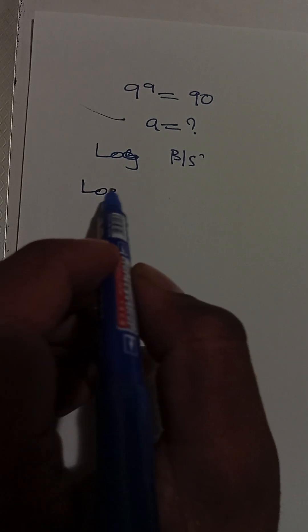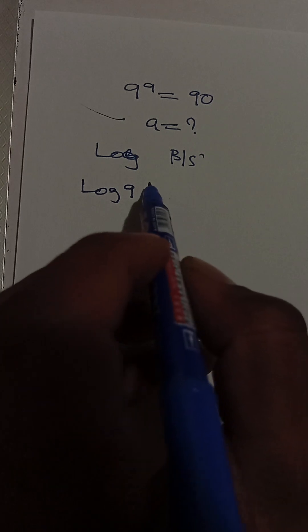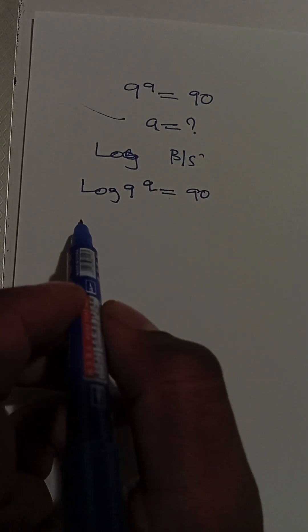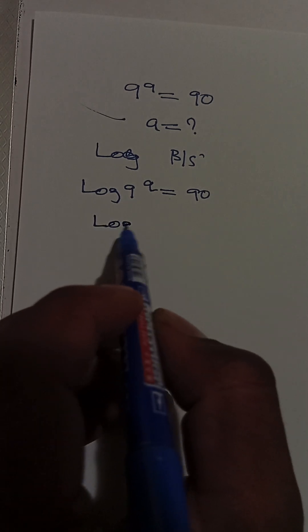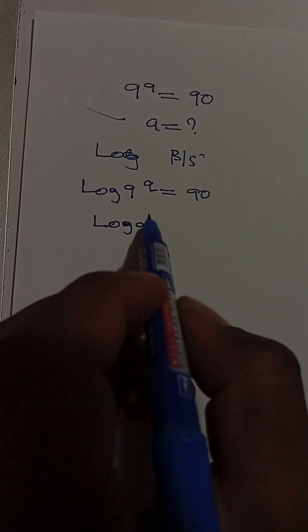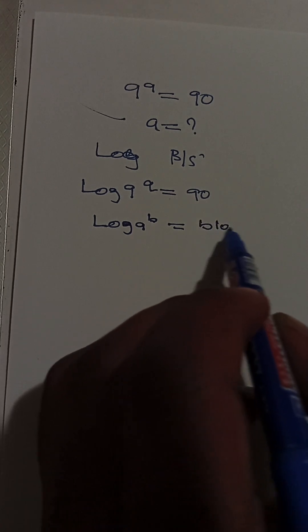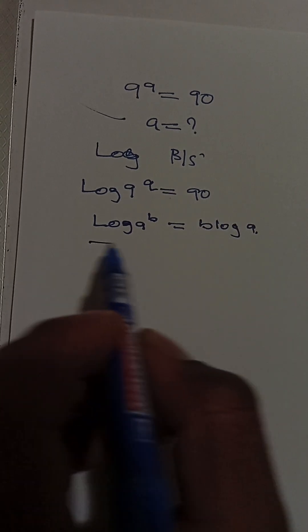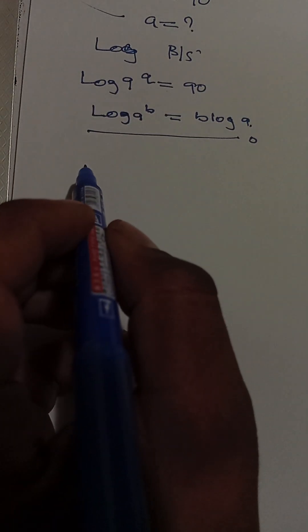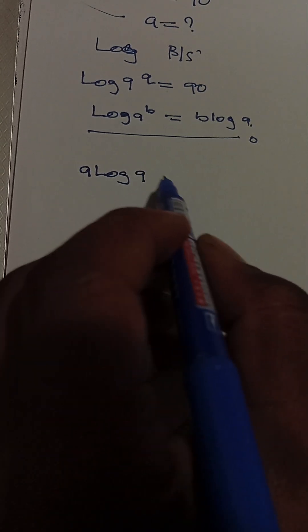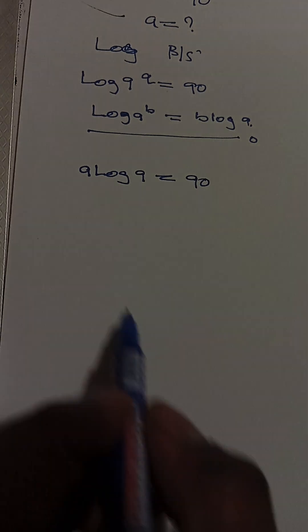So we have log(9^a) = log(90). Using the logarithm power rule — log(a^b) = b·log(a) — this becomes a·log(9) = log(90).